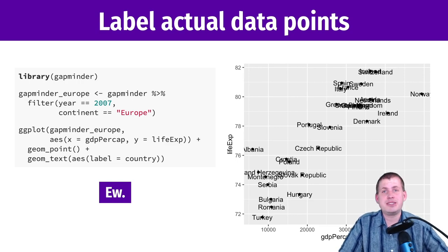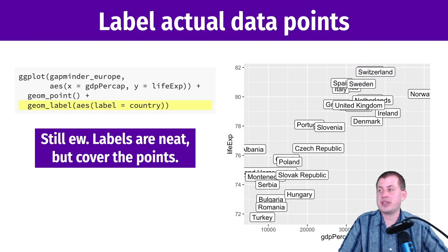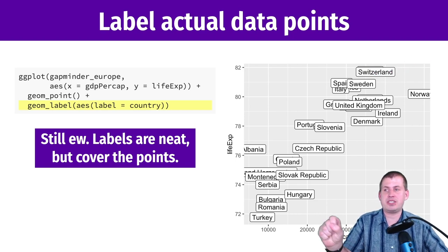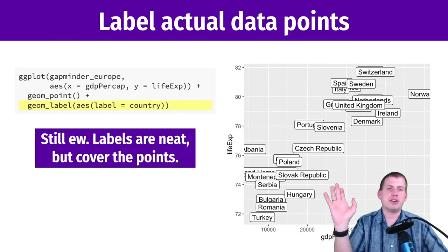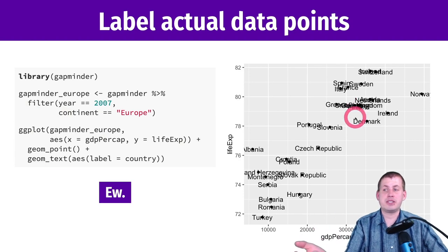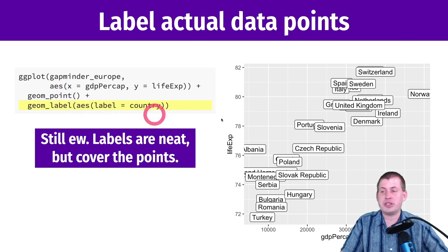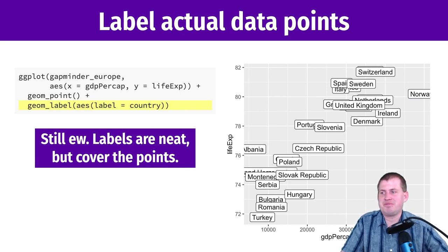An alternative is geom_label — the only difference from geom_text is that geom_label has a border and a fill area. You can map things onto the fill aesthetic, like continent or population, and you can color labels by a variable just like other geoms. geom_label looks nicer, but now we can't even see the points anymore — the Denmark label is right on top of its point, which is a problem when you want to see the actual data.